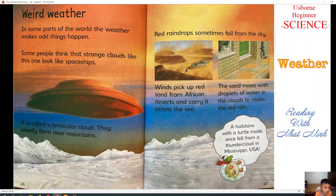It's actually a cloud — it is called a lenticular cloud. They usually form near mountains. Red raindrops sometimes fall from the sky. The wind picks up red sand from African deserts and carries it across the sea. The sand mixes with droplets of water in the clouds to make red rain. A hailstorm with a turtle inside once fell from a thundercloud in Mississippi, USA.